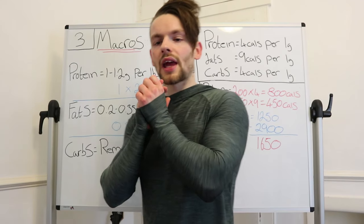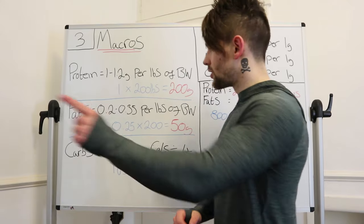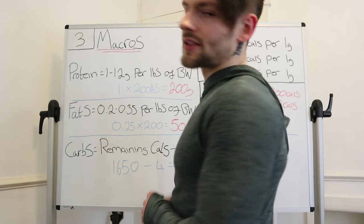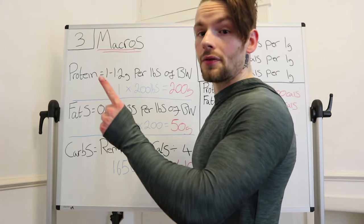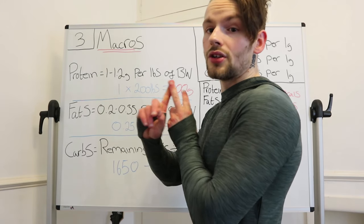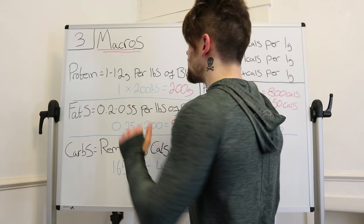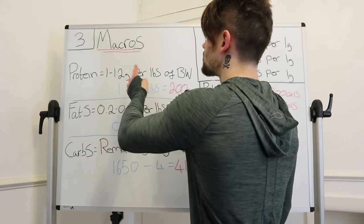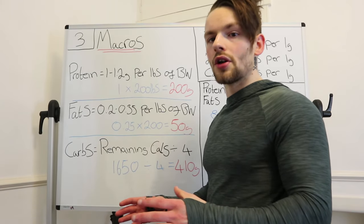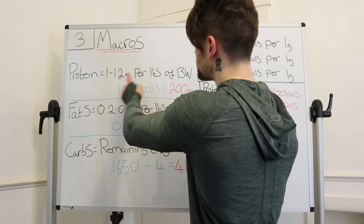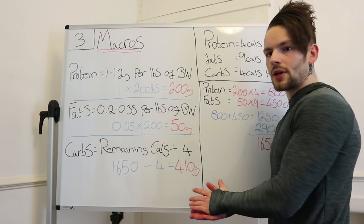Once you've got your TDEE, let's work out your macronutrients. Your macronutrients are your protein, carbs, and fats. You'll need your weight in pounds and your TDEE handy. The first thing we're going to work out is protein. We times our body weight in pounds by either 1 to 1.2. One gram of protein per pound of body weight is fine for 99% of people, so we'll go with that. So 1 times 200 pounds gives us 200 grams of protein per day.